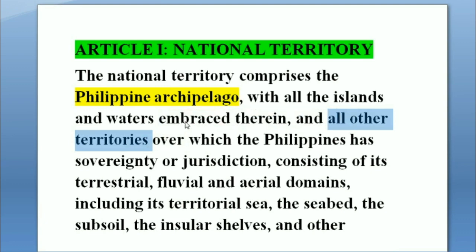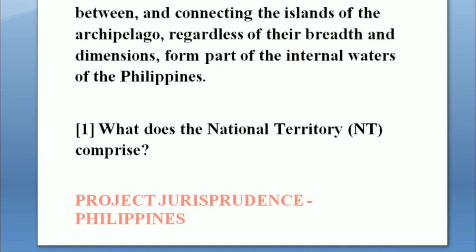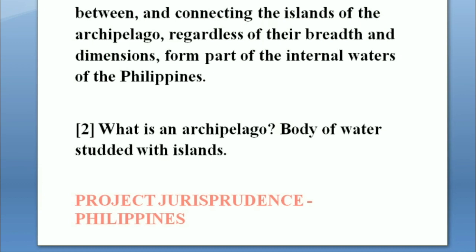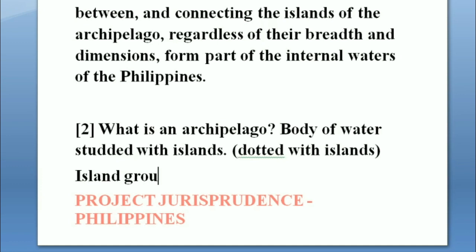Second question: what is an archipelago? An archipelago is a body of water studded with islands. In other books, it is defined as an island group, or a chain of islands, or a cluster or collection of islands, or a body of water scattered with islands. However, the definition used in our law under the law of the sea is that an archipelago is an island-studded sea.